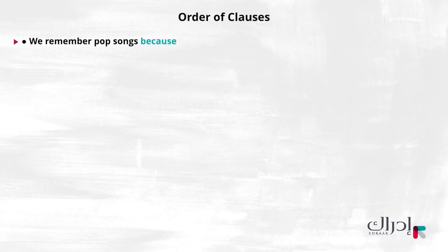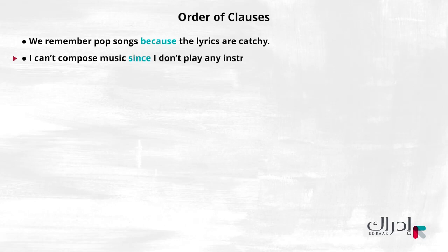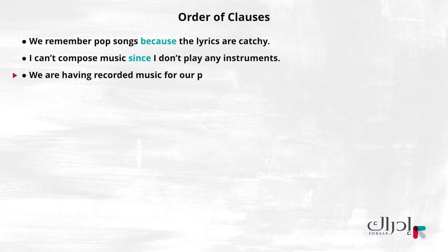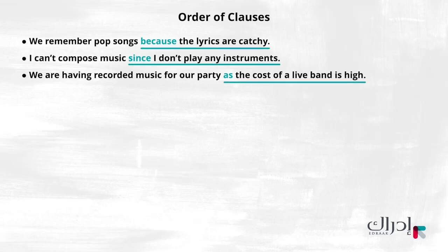Do you remember our example sentences for subordinating conjunctions of reason? We remember pop songs because the lyrics are catchy. I can't compose music since I don't play any instruments. We are having recorded music for our party as the cost of a live band is high. In all three examples, the dependent clause comes after the independent clause.